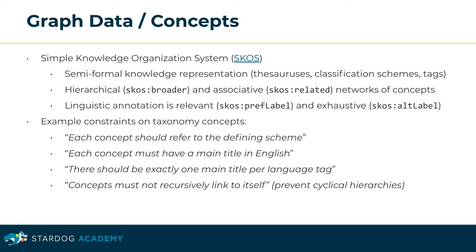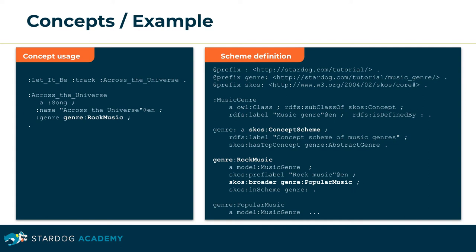Or to prevent cycles in concept hierarchies. In the instance data on the left, the concept genre 'rock music' was used as the value of the genre property. The SKOS scheme on the right defines a hierarchical vocabulary of music genres, with rock music being a sub-concept of the broader 'popular music' concept.